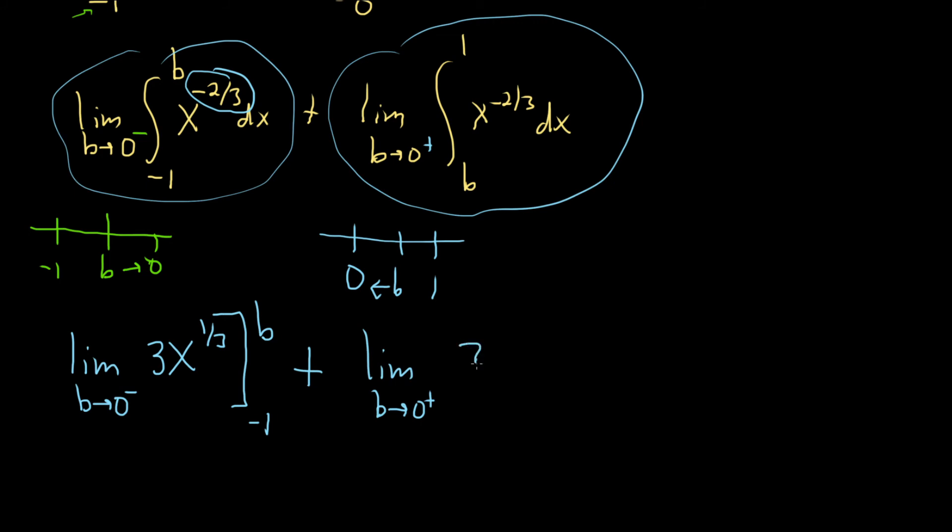And we're going from negative 1 to b, plus the limit as b approaches 0 from the right. Same thing, we're going to get 3x to the 1 third. Except now we're going from b to 1.